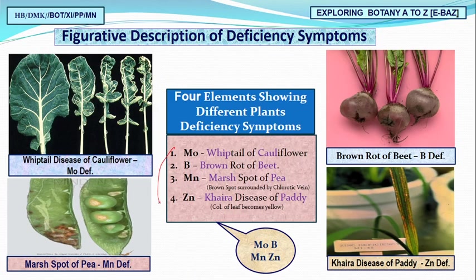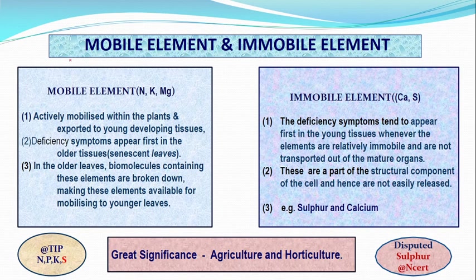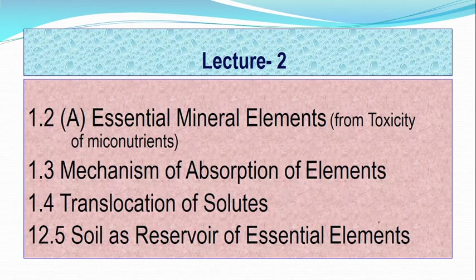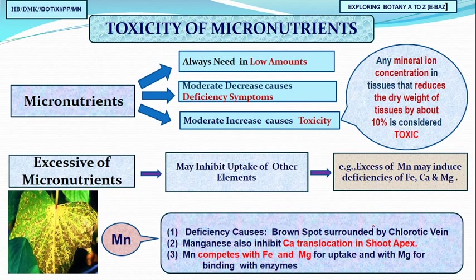Molybdenum causes the 'reptile disease' of cauliflower — a lizard-like structure. We studied mobile elements: N, K, Mg (three mobile elements), and immobile elements calcium and sulfur (sulfur's position is disputed). These are very important for agriculture and horticulture. Then we started the second lecture.